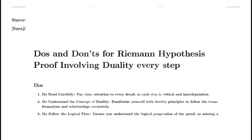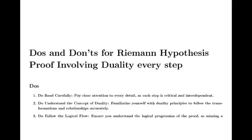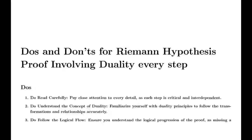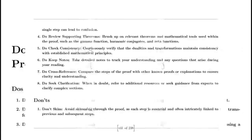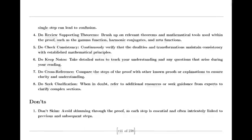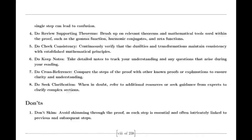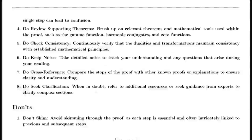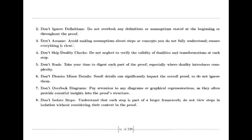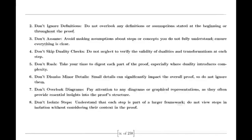Basel problem solution. Euler also tackled the Basel problem, which was concerned with finding the exact sum of the reciprocals of the squares of the integers. By examining the sine function and its product representation, Euler derived a formula showing that this sum equals pi squared over 6. This result was a significant achievement in mathematics, highlighting Euler's ability to uncover connections between different mathematical concepts.